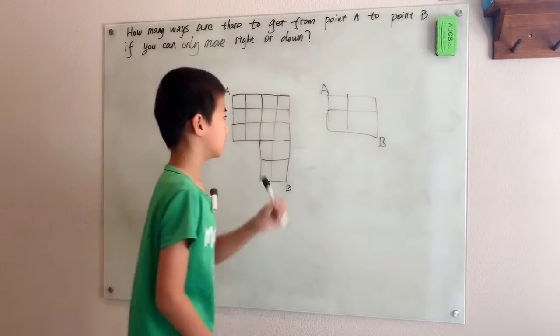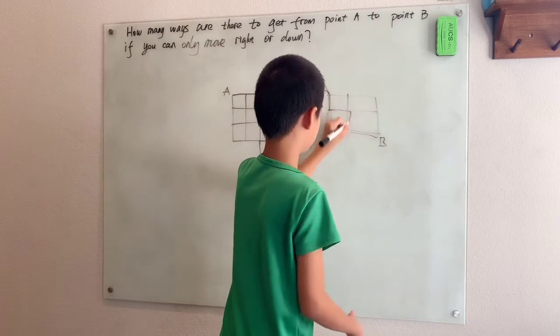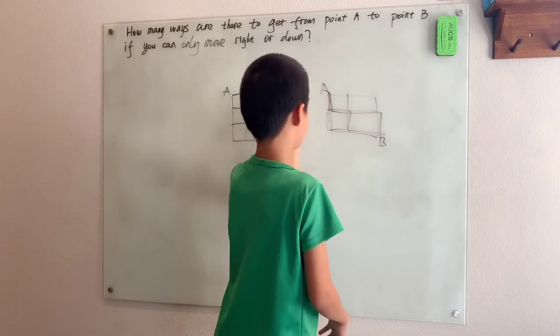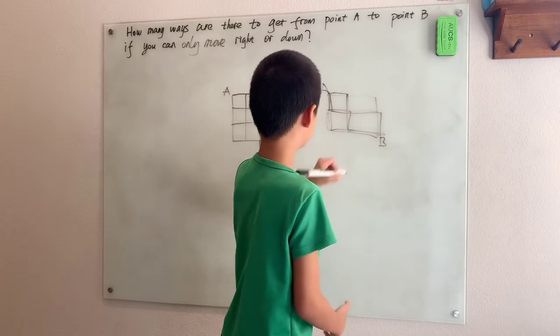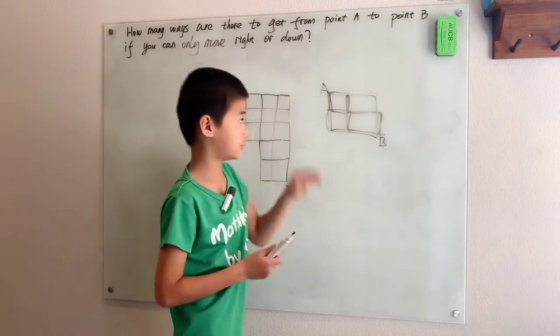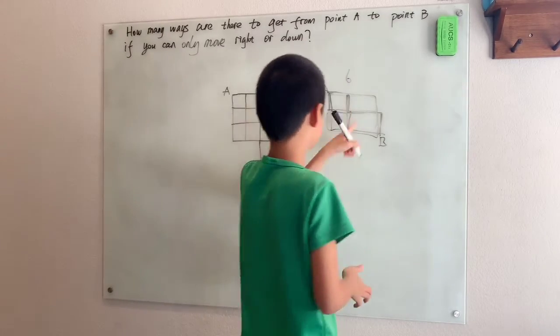Well since this problem is a lot simpler we can just count the answers. So one, two, three, and then the other side: one, two, three. So three on one side and three on the other. So six ways in total to do this problem.